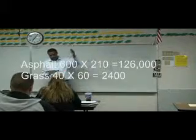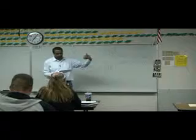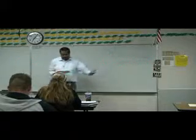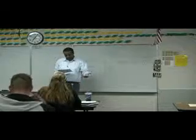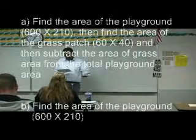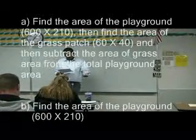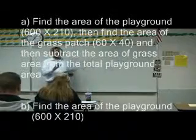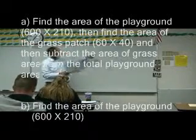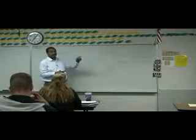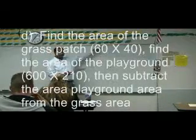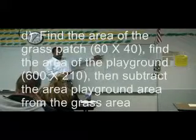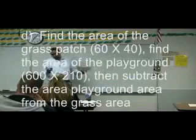Everyone said A. Answer A is: find the area of the playground, find the area of the grass, then subtract the area of the grass from the playground. The reason it couldn't be D is because D had the same steps but backwards — subtracting 126,000 from 2,400 instead.